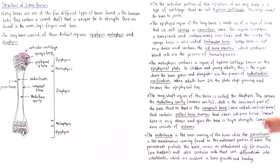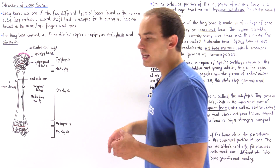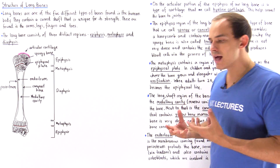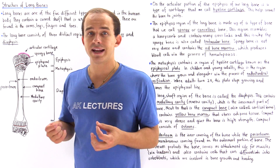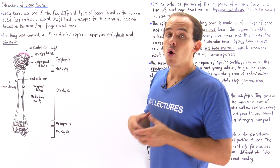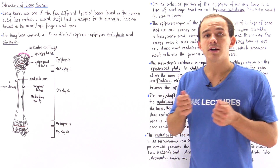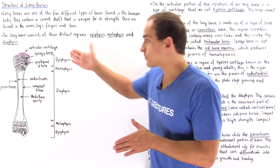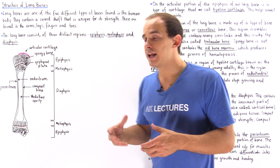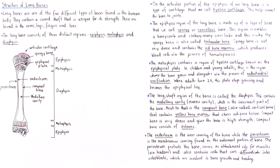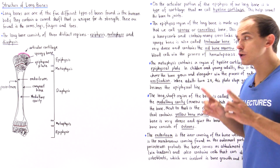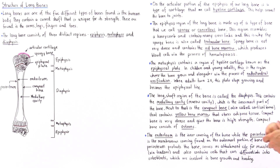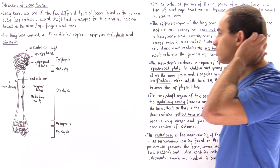The periosteum is involved in bone healing and bone growth. Inside the periosteum are cells capable of differentiating into osteoblasts, which are the cells involved in bone growth and healing. The periosteum also covers and protects the bone, and it serves as the attachment point for tendons that connect muscles to our bones. This concludes the structure of our long bones.